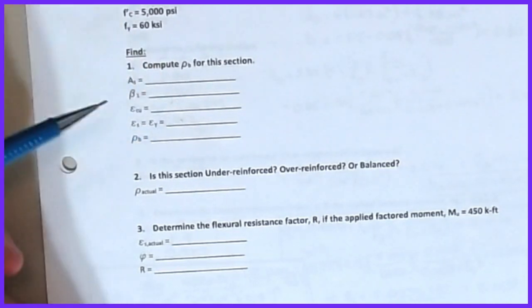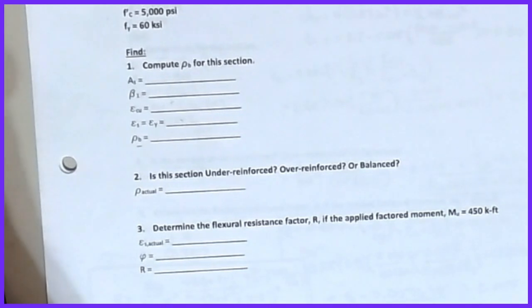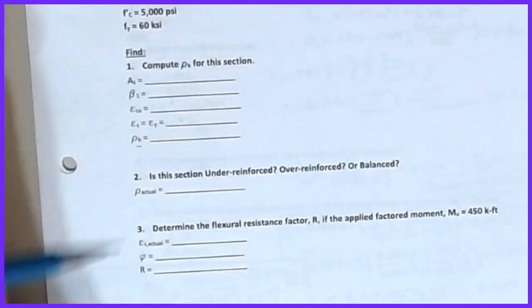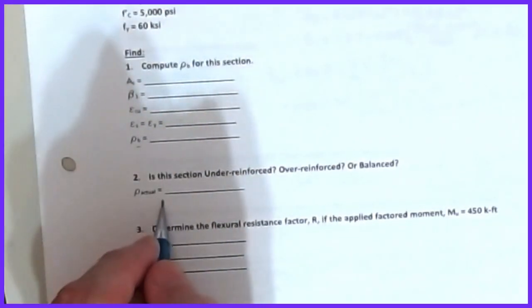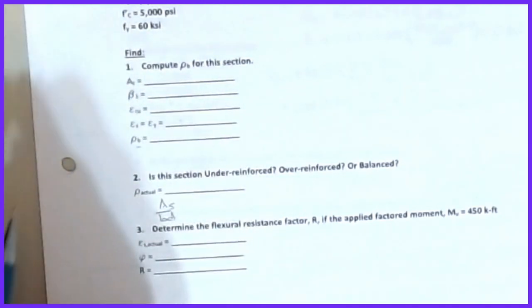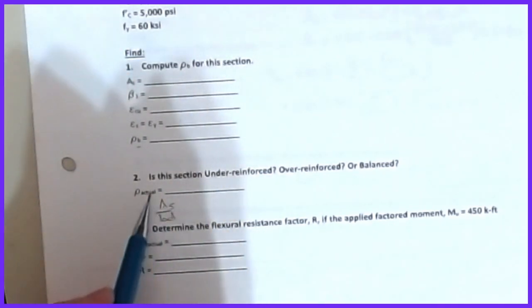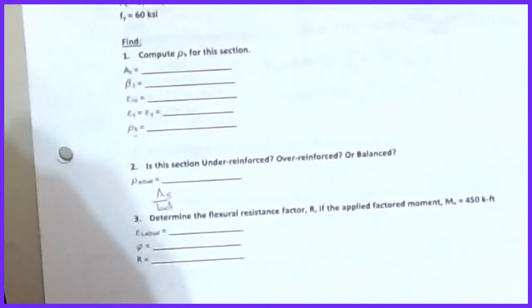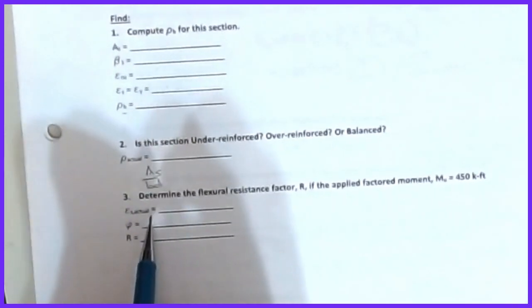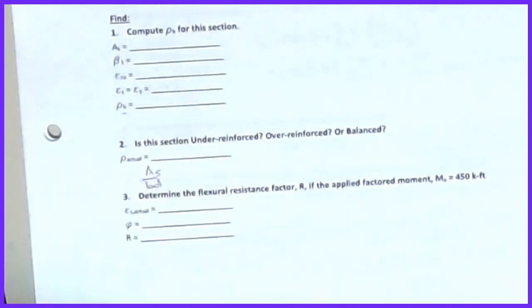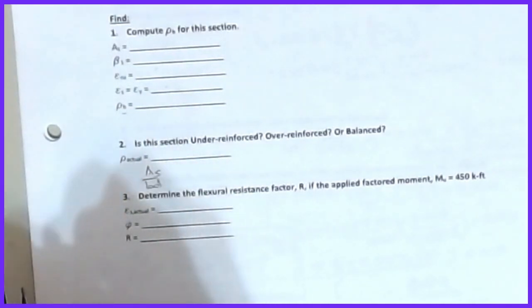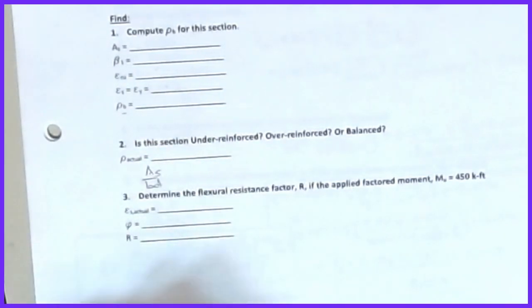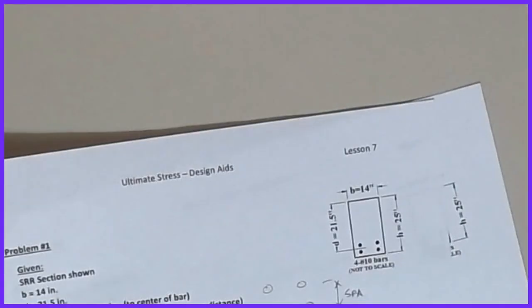Once rho_balanced is calculated, determine whether the section is under-reinforced, over-reinforced, or balanced by computing rho_actual = As/(b*d) and comparing to rho_balanced. If rho_actual < rho_balanced it's under-reinforced; if equal, balanced; if greater, over-reinforced. Then use the R tables to work through the problem — compute the actual strain, find phi, find R, and work through the design moment capacity.